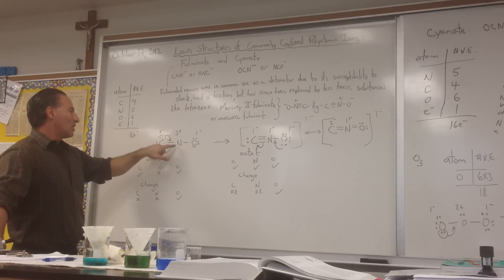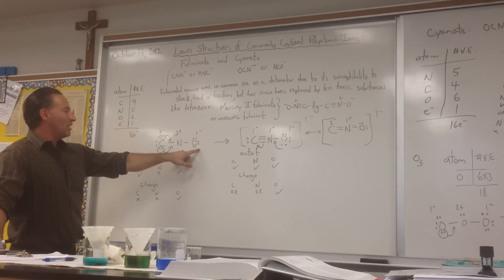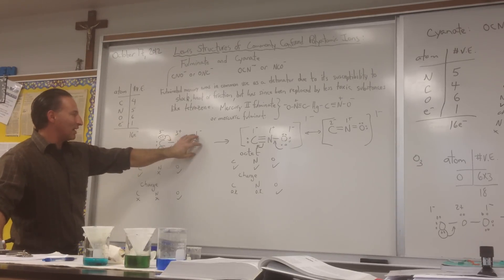And nitrogen would have 2 electrons in its possession, but it wants to possess 5, so it would have a positive 3 charge. Oxygen would have a minus 1 charge, given by the fact that it has 2, 4, 6, plus 1, 7 electrons in its possession, although it wants to have 6.